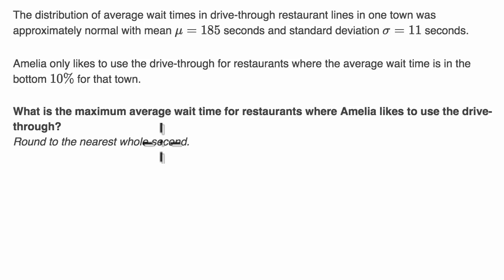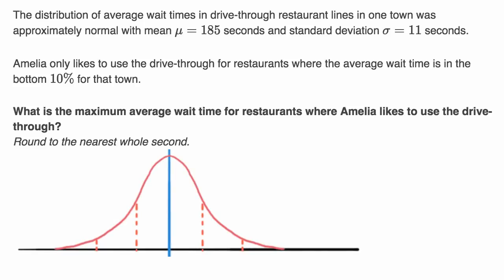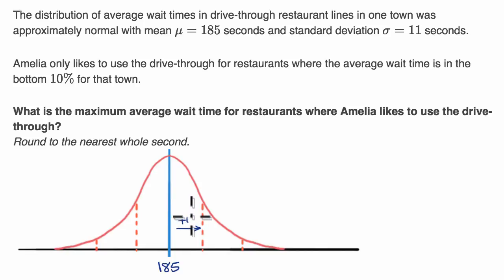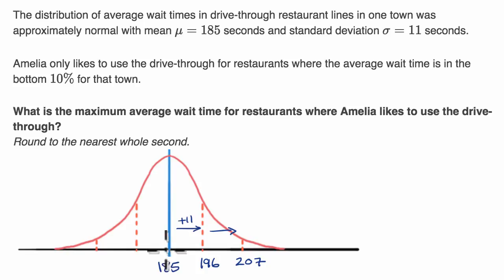So let's think about what's going on. They're telling us that the distribution of average wait times is approximately normal, so let's get a visualization of a normal distribution. They tell us the mean is 185 seconds, and the standard deviation is 11 seconds. So for example, one standard deviation above the mean would be 196 seconds, and another 11 gives 207. One standard deviation below the mean would be 174 seconds.